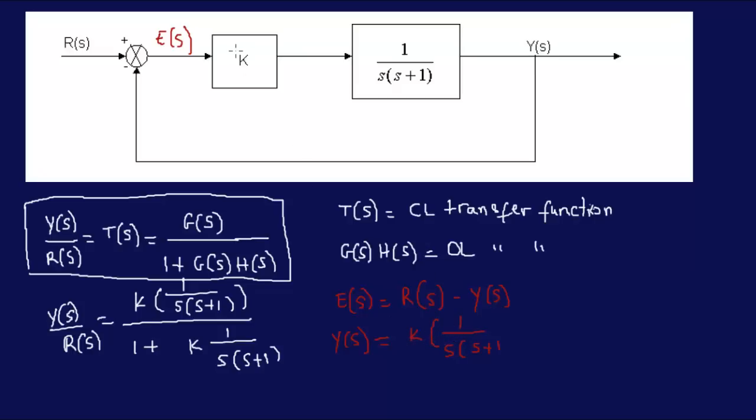So, you have Y of S is equal to the whole function coming in here, times E of S, of course, because you have everything. The forward path is the whole thing. E of S. I almost forgot that one.